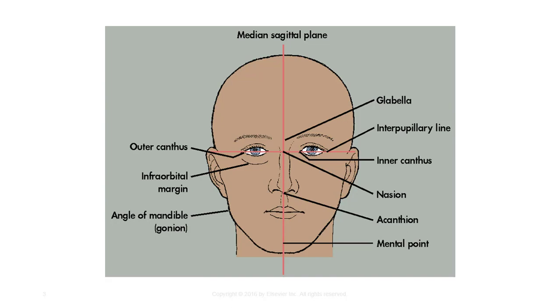The infraorbital margin is generally where bags collect, and the lower margin of the orbit lies here as well. The acanthion is where the nose meets the upper lip, and the angle of the mandible is otherwise known as the gonion.